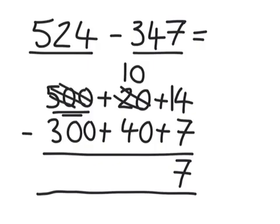So, the 100 goes to the 10, which becomes 110. And the 500 becomes 400. And then we can complete the 10s. So, 110 take away 40 is 70.